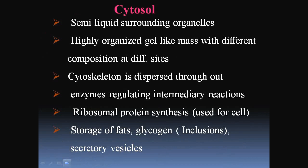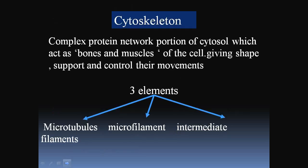Cytosol is another part of the cytoplasm — a semi-liquid surrounding organelles, a highly organized gel-like mass with different composition at different sites. The cytoskeleton is dispersed throughout the cytosol. Enzymes regulating intermediary reactions, ribosome protein synthesis, and storage of fat, glycosomes and secretory vesicles are among its functions. The cytoskeleton is made up of three elements: microtubules, microfilaments, and intermediate filaments — a complex protein network acting as the bones and muscles of the cell, giving it shape, support, and control of movement.